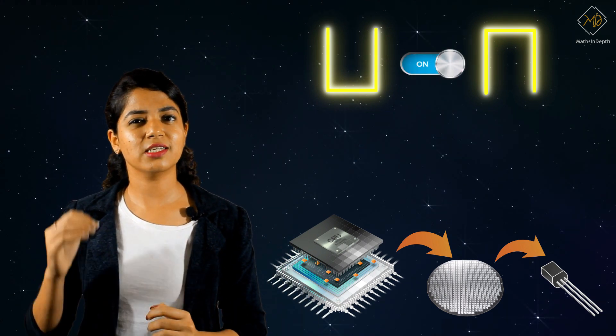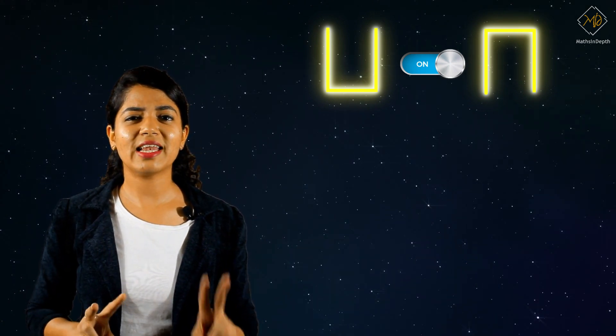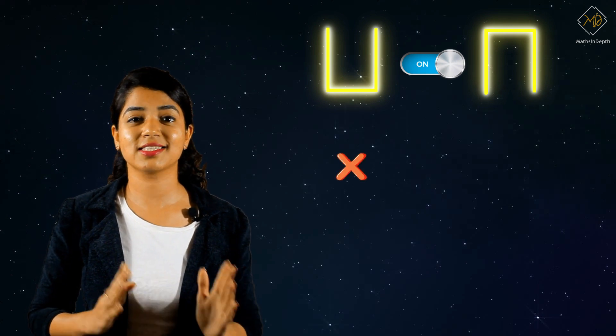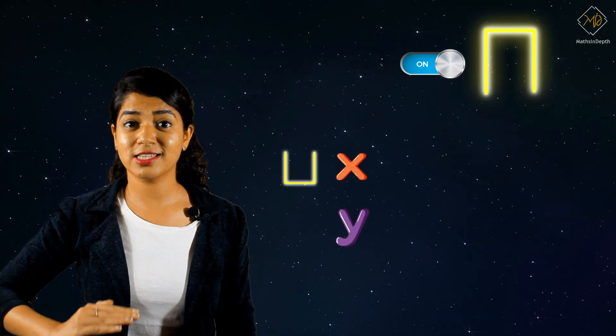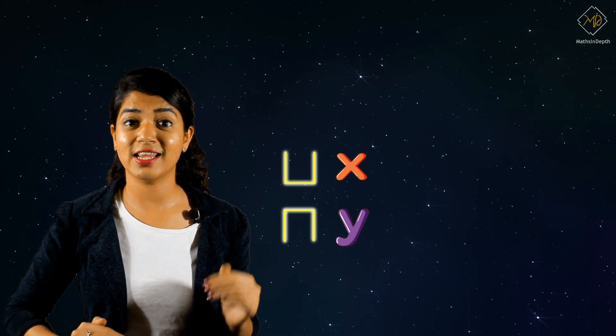Now, how do we represent these high and low voltage levels? Of course, you can represent these voltage levels with any two numbers—let's say X and Y, where X is low voltage and Y is high voltage, provided that X is less than Y.